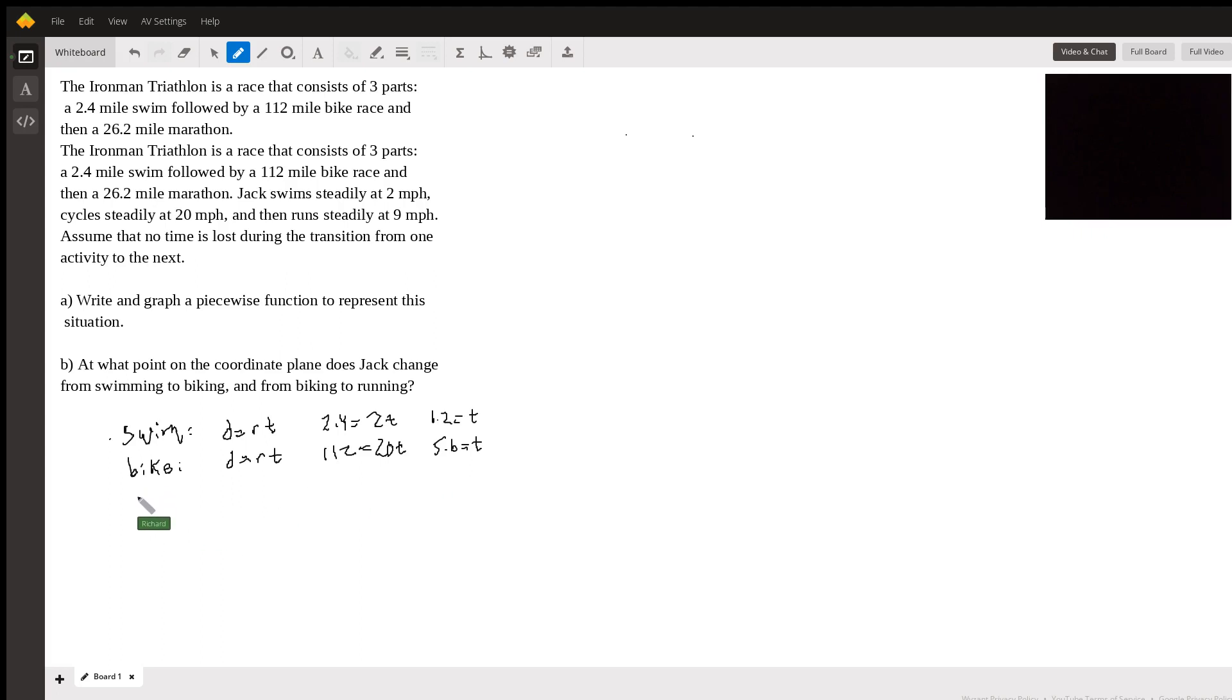And then the last thing he does is he runs. Once again, we're going to use distance equals rate times time. And we're told that he runs 26 miles, 26.2. And he runs at 9 miles per hour. And once again, we just use our calculators, divide 26.2 by 9. And you're going to get 2.91. I'll just call it 2.9 to keep things easy.